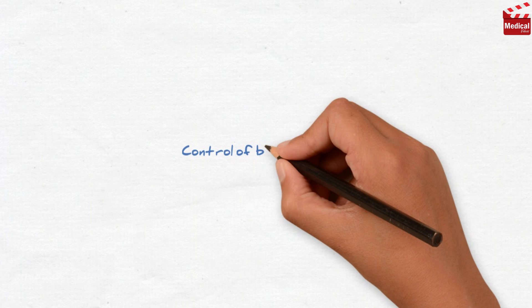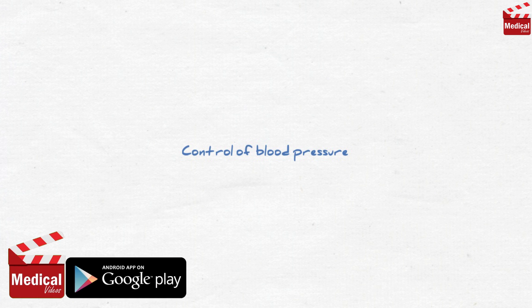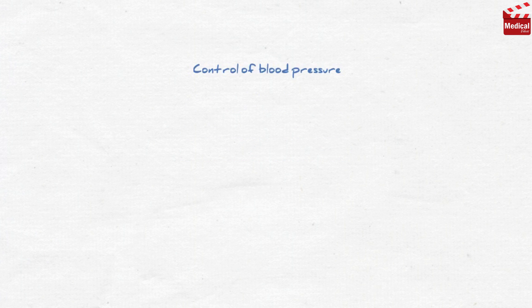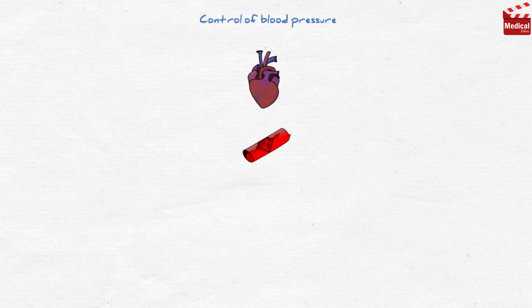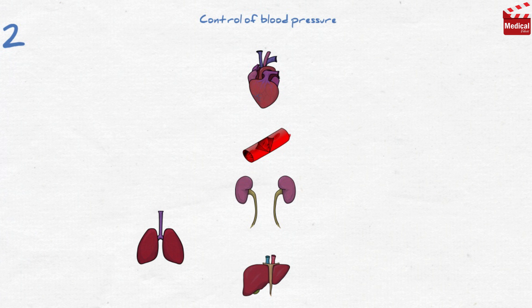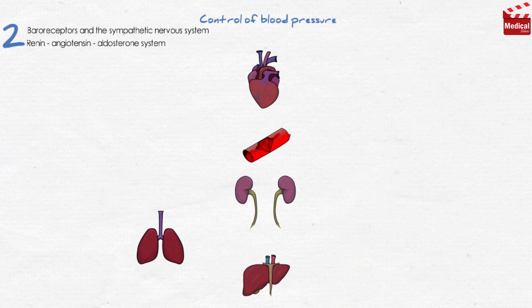Now let's understand the mechanisms involved in the control of blood pressure in the body, as that will help us understand how the drugs work. There are multiple organs involved in the control of blood pressure: the heart, blood vessels, kidneys, liver, and lungs. There are two major processes that control these organs in harmony: the baroreceptors in the sympathetic nervous system, and the renin-angiotensin-aldosterone system.